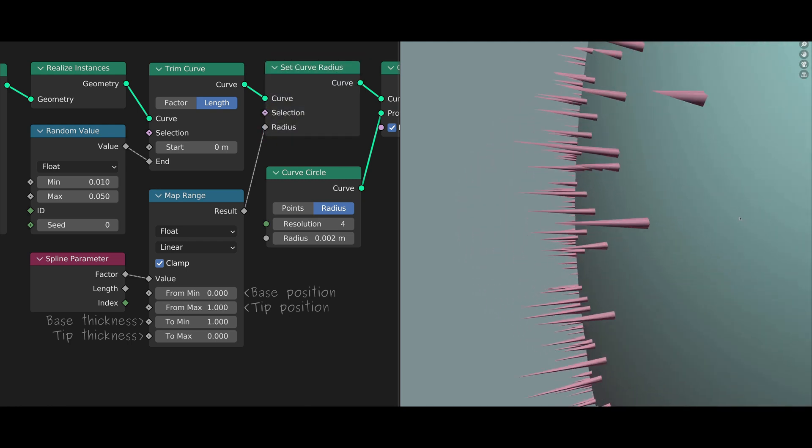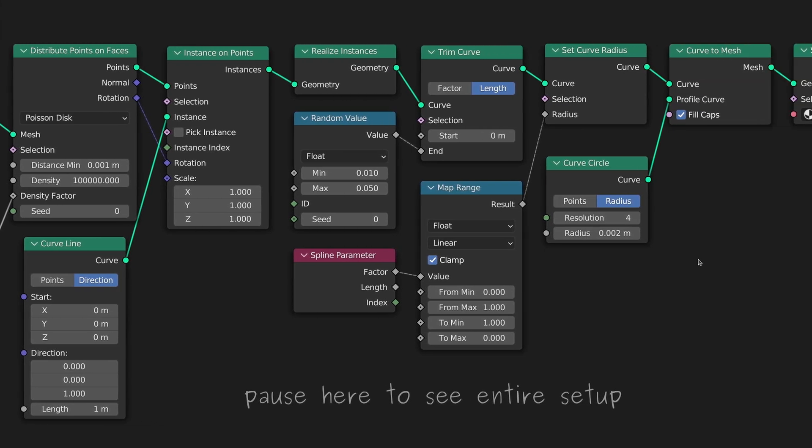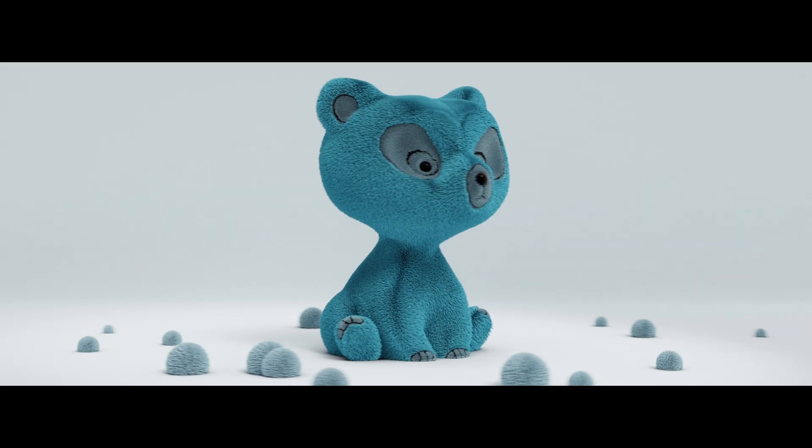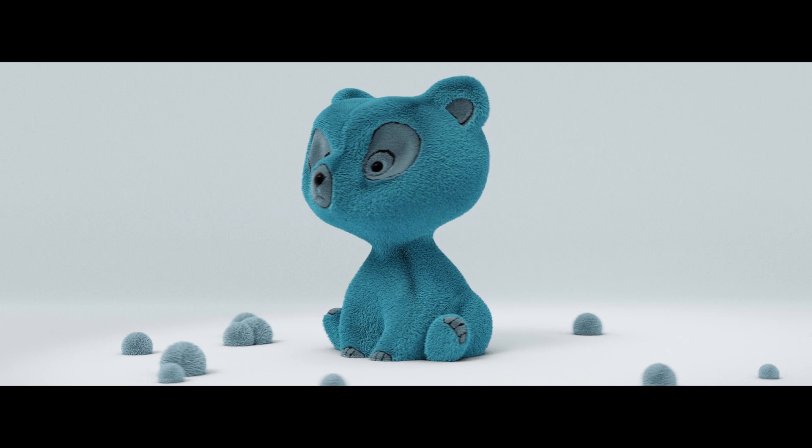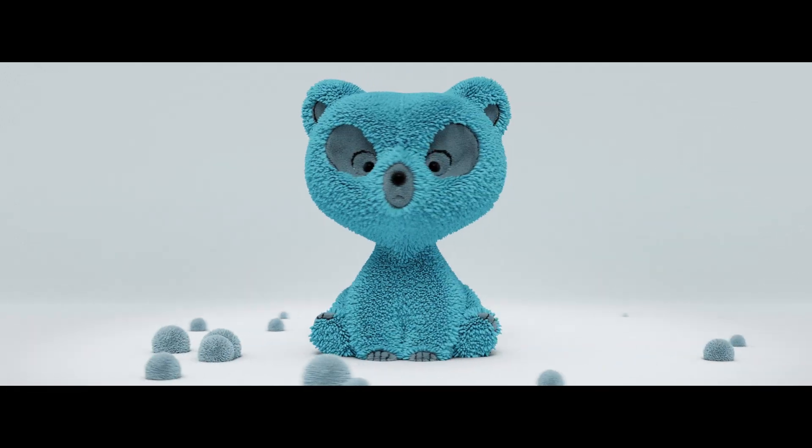So now if I zoom in, you can see how we can adjust the thickness along each strand of fuzz using the values on the map range node. Using this, we can create characters that either look more natural or more artificial, similar to a toy.